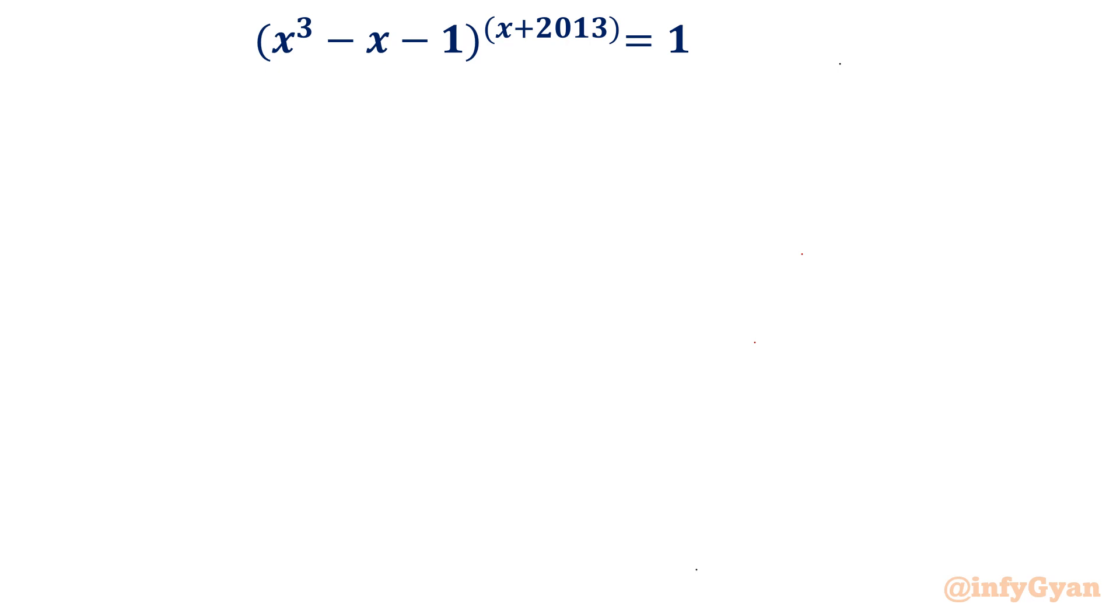Let's get started by writing our general form of a power b equal to 1. There are three cases. Let me write the three cases first, then we will come to our problem. First case is if base is 1 and its power belongs to real numbers, then a power b will be 1.